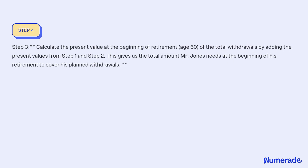Step 3: Calculate the present value at the beginning of retirement (age 60) of the total withdrawals by adding the present values from Step 1 and Step 2. This gives us the total amount Mr. Jones needs at the beginning of his retirement to cover his planned withdrawals.